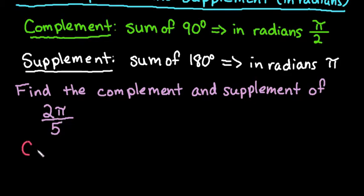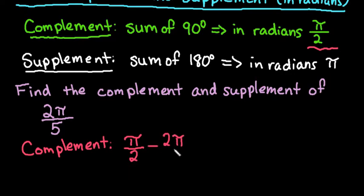In order to find the complement, we would take the fact that we know that together the 2π over 5 plus another angle have to add up to be π over 2. So instead of setting up as addition with a variable we could just say that it's π over 2 minus 2π over 5.